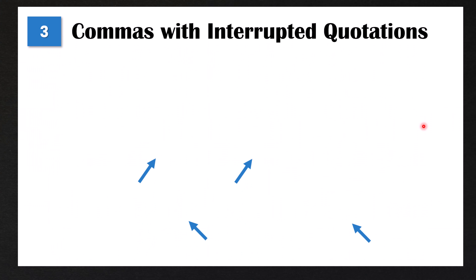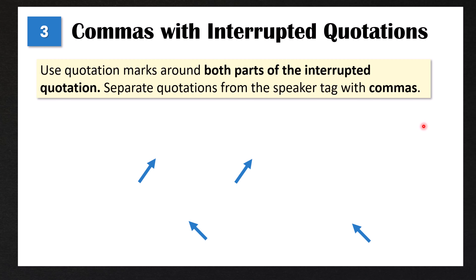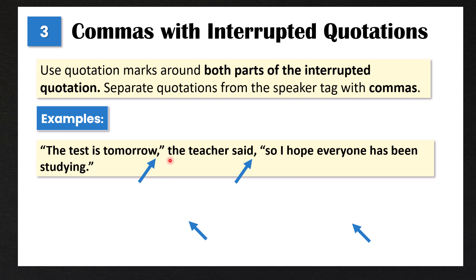Now let's go on to rule number three: how to use commas with interrupted quotations. We use quotation marks around both parts of the interrupted quotation and separate quotations from the speaker tag with commas. For example: 'The test is tomorrow,' the teacher said, 'so I hope everyone has been studying.' Here the speaker tag is in the middle. The complete quotation is 'The test is tomorrow, so I hope everyone has been studying.' We put a comma after the first part and closing quotation mark, then the speaker tag, then another comma, then finish the quote with a period and closing quotation mark — two sets of quotation marks and two commas.